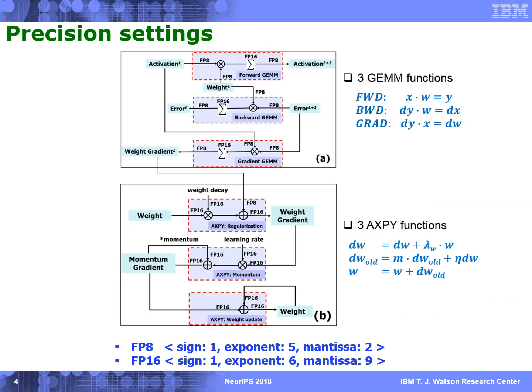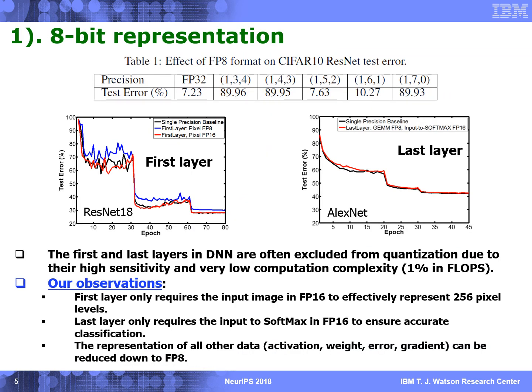Here shows the target precision setting for all the functions in the DNN training. For the listed precision, FP8 has the format of 1-5-2, while FP16 has a format of 1-6-9. It's important to find the format that can balance the representation accuracy and the dynamic range for all the popular networks. After an in-depth study of the data distribution, we found that 1-5-2 works best for all the networks we tested.